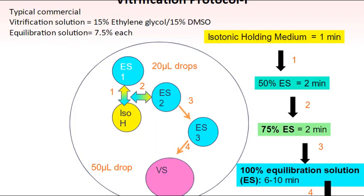Several different vitrification protocols exist in the ART field. One popular method involves the gradual mixing of equilibration solution with the initial isotonic holding medium in two steps at ambient temperature, before equilibration in 100% equilibration solution for 6-10 minutes, prior to final dilution and device loading in the vitrification system. It is always a good idea to rinse or clear the pipette between solutions to minimize cross-contamination. This method allows the embryologist to work with 3 to 4 groups of individual embryos in a 15-minute interval.